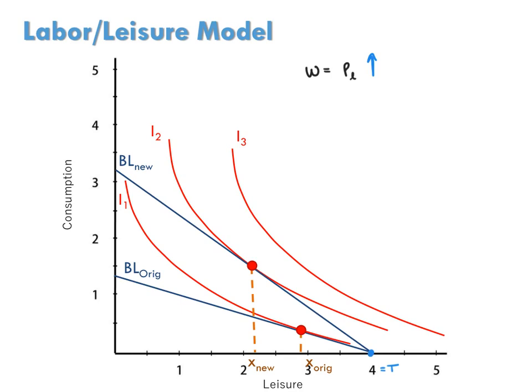On the other hand, the consumption intercept represents how much consumption the person can afford when she leisures none of the time and so works all of the time. Now increasing the wage rate does increase the intercept because if you work all the time, getting paid a higher wage allows you to afford more stuff. So we see a rotation in the budget line. How does this affect the consumer's choice of leisure?